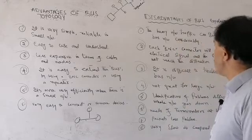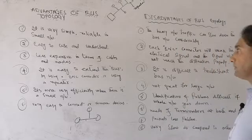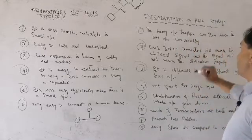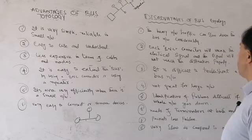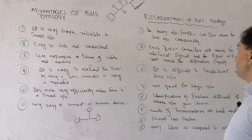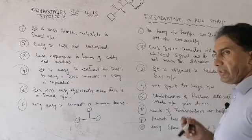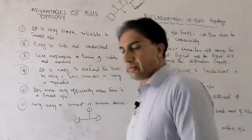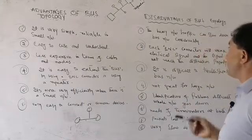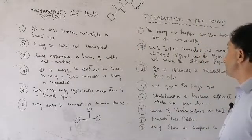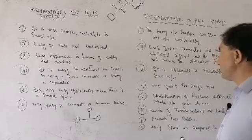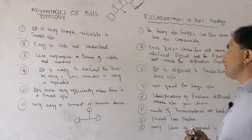Now for the disadvantages. The first disadvantage is that heavy network traffic can slow down the entire bus network considerably. If each computer wants to transmit data simultaneously, collision will take place and the network will slow down considerably.